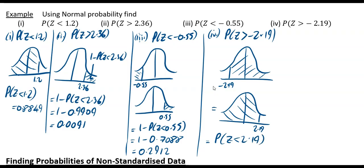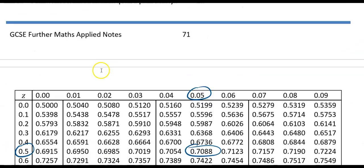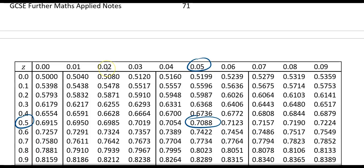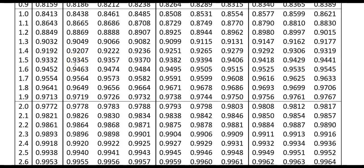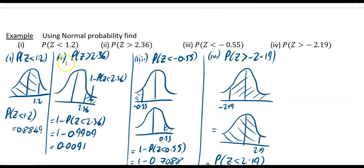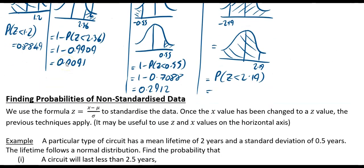We go back to our tables and get that. We're looking for 2.19. There's our 2.1, and 0.9 is your last column. It corresponds to 0.9857. We put that in, and that is us done: 0.9857.